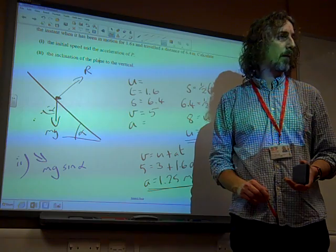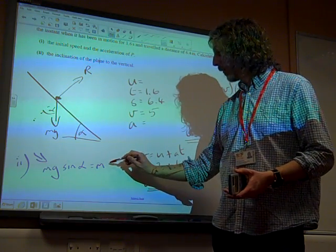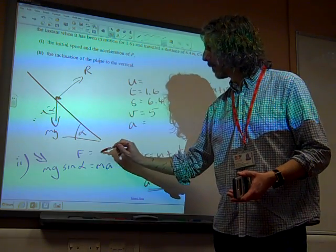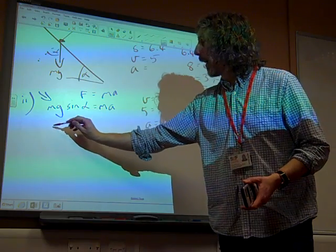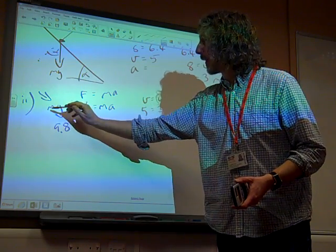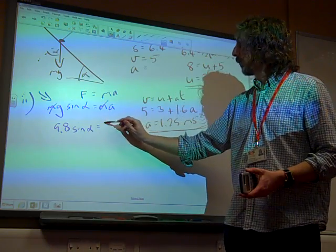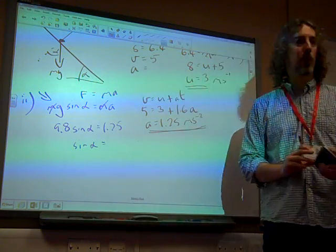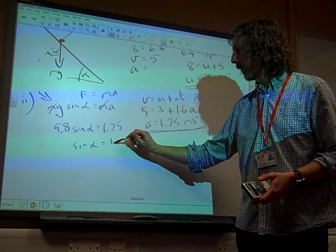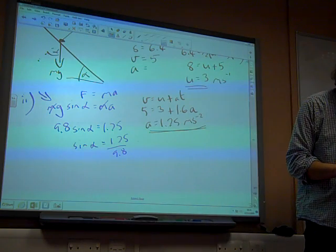Mg sin alpha is equal to the mass times the acceleration using F equals MA. Which gives us that 9.8... I'm going to cancel M off both sides. 9.8 sin alpha is 1.25. So sin alpha is 1.25 over 9.8.